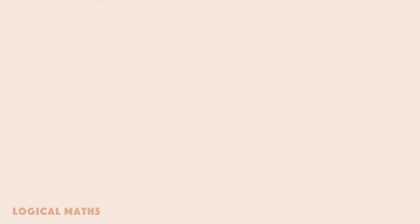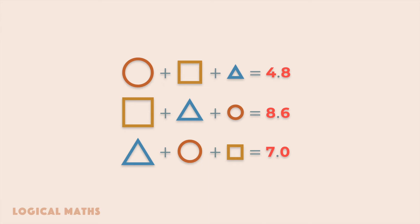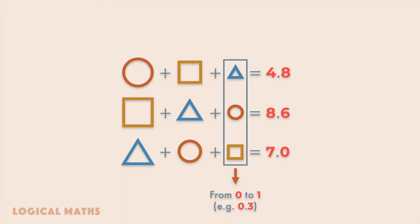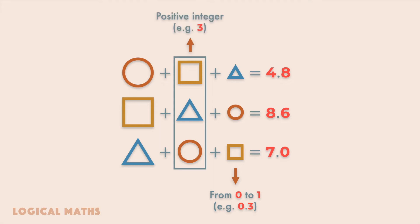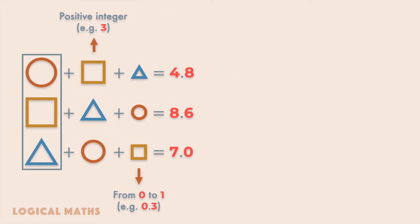Hey guys, you are watching a new video on Logical Math channel. In the puzzle, each of the three small figures represents a strictly rational positive number less than one — for example, 0.3. Each of the medium figures represents a strictly positive integer — for example, 3. And each of the large figures represents a number which is equal to the sum of numbers of a medium figure and a small figure of the same kind: circle, square, or triangle.